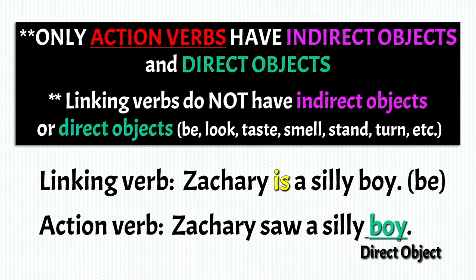Another important fact: only action verbs have indirect objects and direct objects — only action verbs. Linking verbs do not have indirect objects or direct objects. Linking verbs are those like be, look, taste, smell, stand, turn, etc.